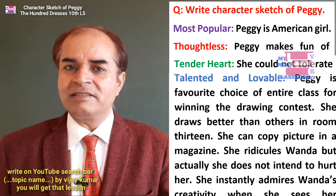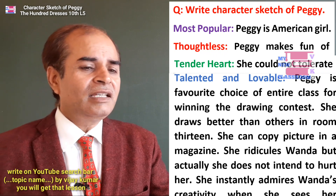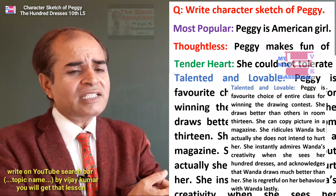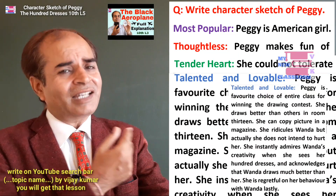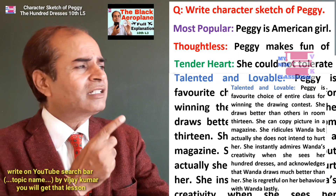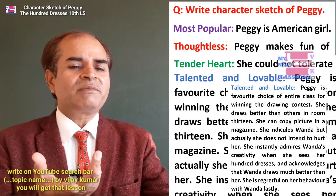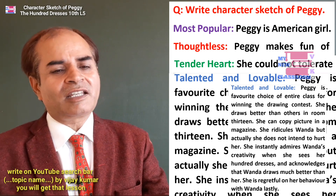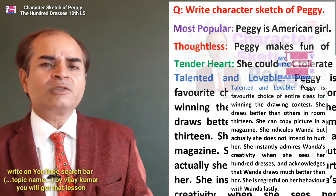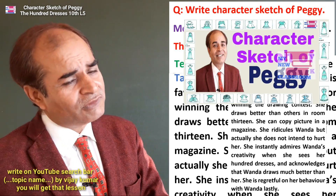She is regretful and remorseful about her behavior with Wanda at the end. So write these four to five points: she is the most popular, she is thoughtless, she has a tender heart and cannot see others suffer, and she is talented and lovable. Four to five points about her character should be enough. For the character sketch of Peggy, five marks is usually what is asked.